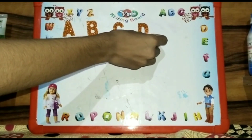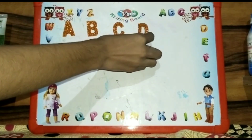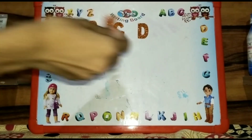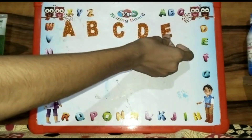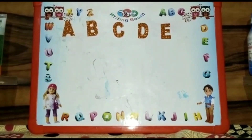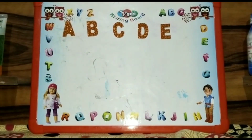D is for Dog. Dog yani kutta. E is for Elephant. Elephant yani haati.